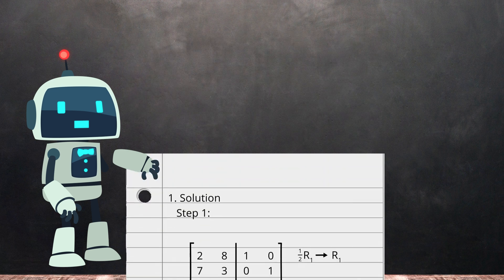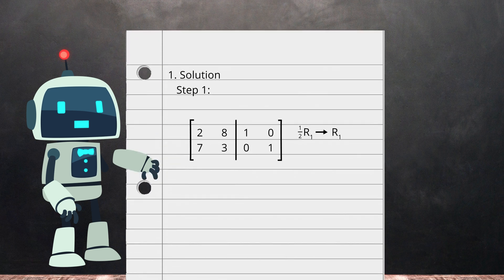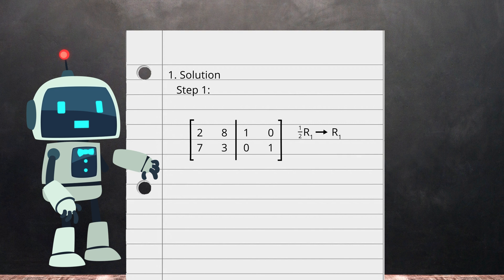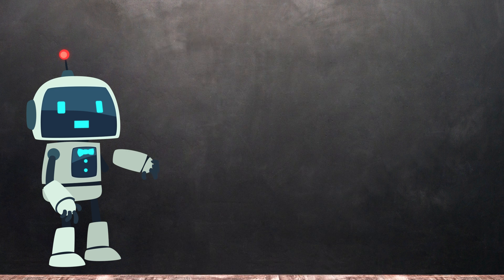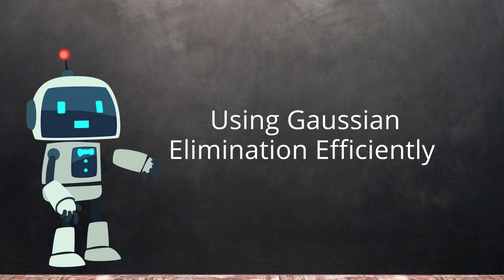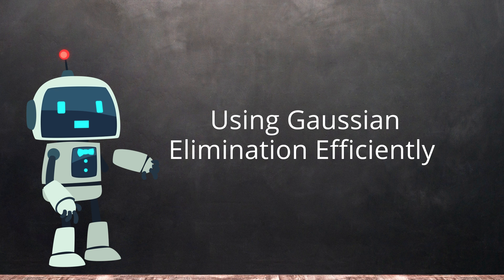When performing Gaussian elimination, following a structured procedure will help you get to your end goal sooner. If we don't follow a structured procedure, the process can get messy, become time-consuming, and make for more errors. Let's go over how to use Gaussian elimination efficiently. This will not only save time, but also decrease the chance of errors along the way.